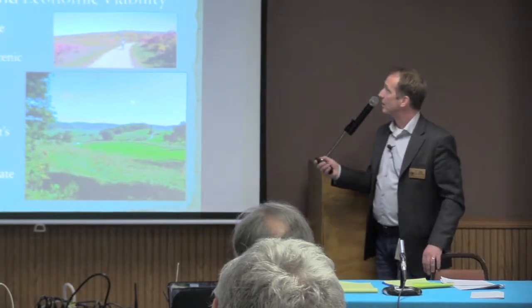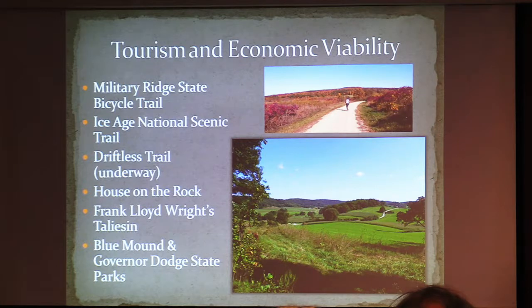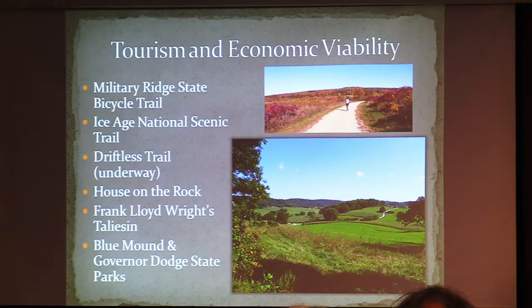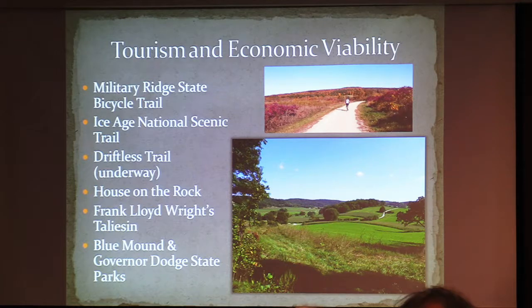In terms of tourism and economic viability — this is looking through the Wyoming Valley to the south, where transmission lines would go along the northern route. This is the Military Ridge State Bicycle Trail, which along the southern route would run parallel and zigzag over the top of it. We have House on the Rock, Taliesin, Blue Mounds, Governor Dodge State Parks, the Ice Age National Scenic Trail — which this line will have to cut across. My colleagues with Ice Age are talking with ATC next week, and I'm encouraging them to hold a harder line.